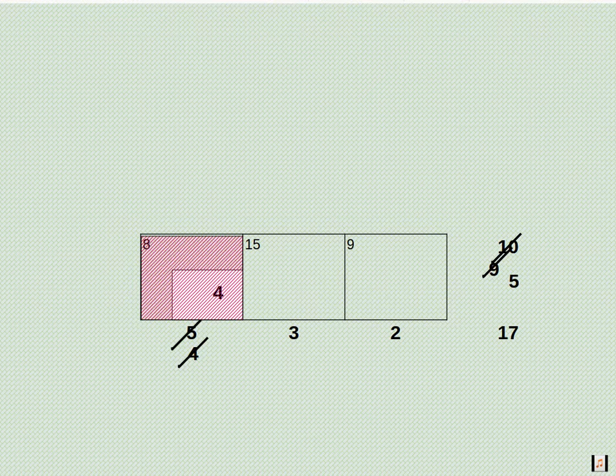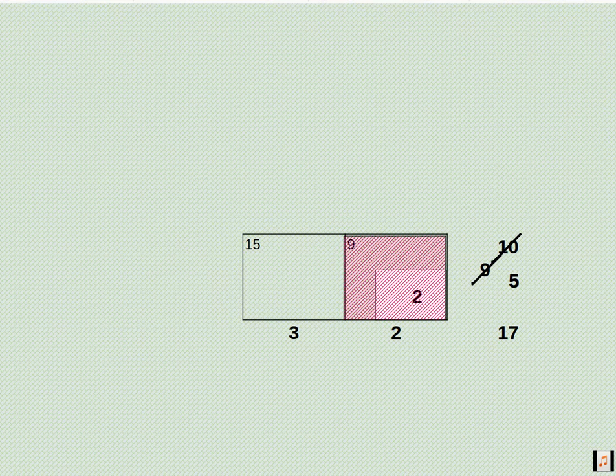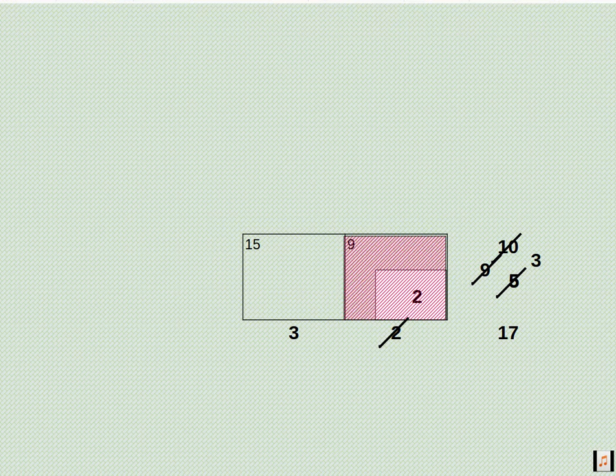In this remaining table 9 is the minimum, so we allocate here. For this 2 is the demand and 5 is the supply, so we allocate 2 here and we have 3 units balance. And we have only one element remaining, 15, so if we allocate here, supply and demand values are both 3, so we allocate here and all our values are satisfied.